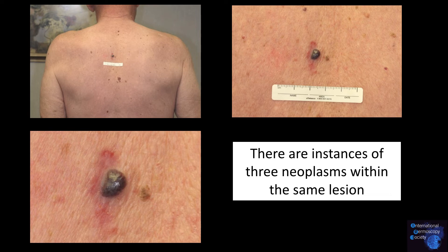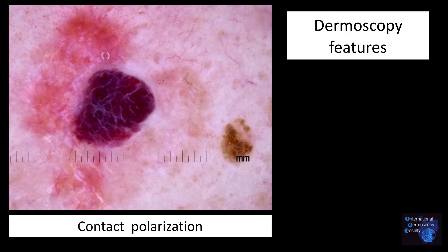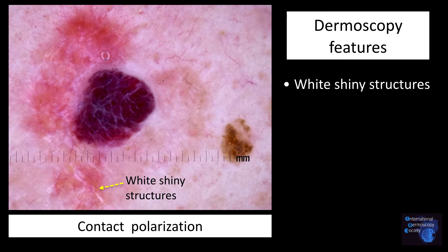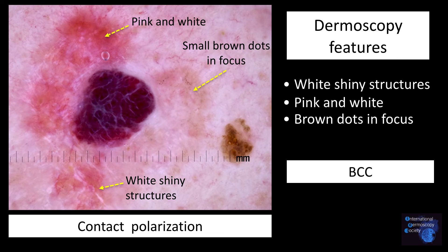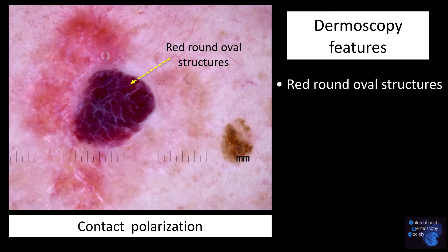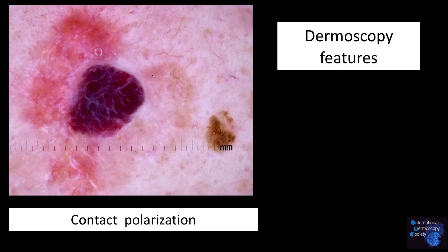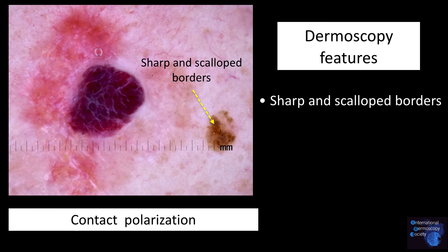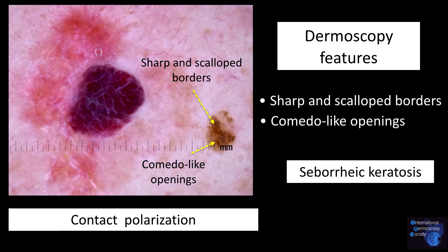There are instances where you can see three neoplasms within the same lesion. Here we see a lesion with contact non-polarized and contact polarized light. With polarized light, one sees white shiny structures, a pink-white area, and brown dots in focus — the characteristics of a basal cell carcinoma. One also sees red round oval structures and white lines — the characteristics of a hemangioma. In addition, one sees sharp and scalloped borders and comedo-like structures — the features of a seborrheic keratosis.